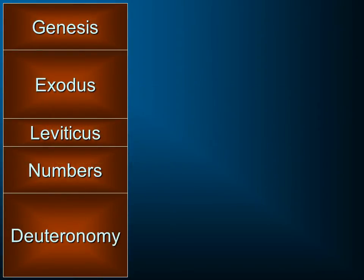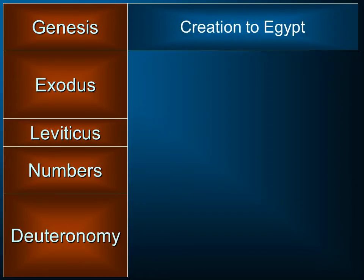We know those first five books as the Torah or the Pentateuch, and they're made up of Genesis — that's where we begin with the creation, the fall, the flood. We go all the way up to Abraham, Isaac, Jacob, and Joseph, all the way down to Egypt. So it begins with creation, and it takes us down to the point where the Israelites are entering into Egypt.